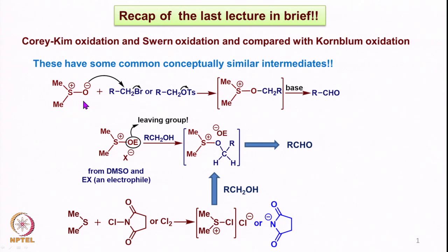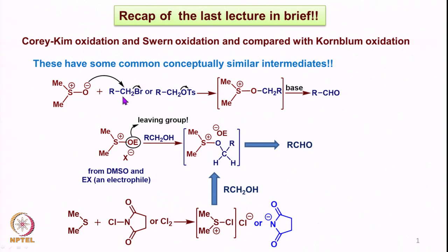In the Kornblum oxidation, we reacted DMSO with halide or tosylate and not directly with alcohols, but it gave an intermediate which upon reaction with base led to the formation of the aldehyde or ketone as the case may be. So basically we react with alcohol derivatives such as bromide or tosylate rather than alcohols directly.